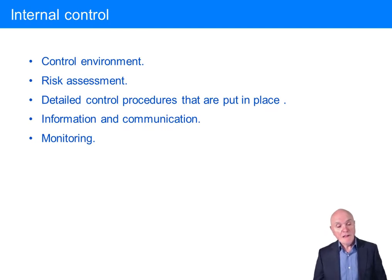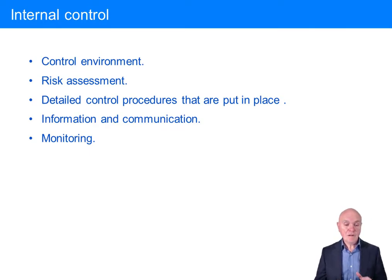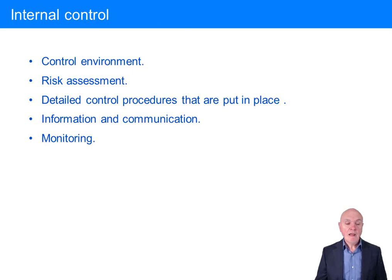How can we stop fraud? Internal control — how the company tries to make sure records are properly maintained and assets are safeguarded. Internal control consists of five components.